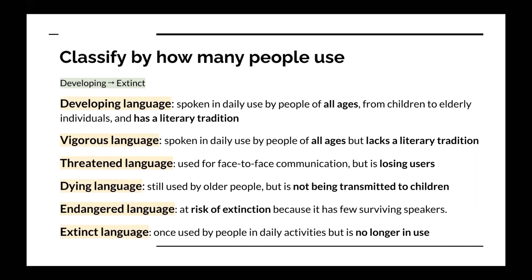Endangered language is a language at risk of extinction because it has few surviving speakers. Lastly, extinct language is a language that was once used by people in daily activities, but is no longer in use. So those are the languages organized by developing to extinct, which represents how many people use them.